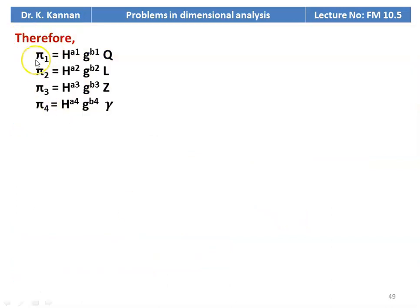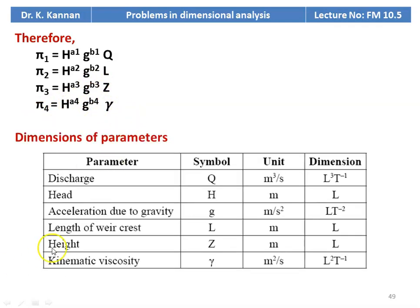The repeating variables are geometric property h and flow property g; there is no fluid property, so only two repeating variables are taken. The pi terms are: pi1 = h^a1 · g^b1 · q, pi2 = h^a2 · g^b2 · l, pi3 = h^a3 · g^b3 · z, pi4 = h^a4 · g^b4 · gamma. Dimensions: q — L³T⁻¹, h — L, g — LT⁻², l — L, z — L, gamma — L²T⁻¹.